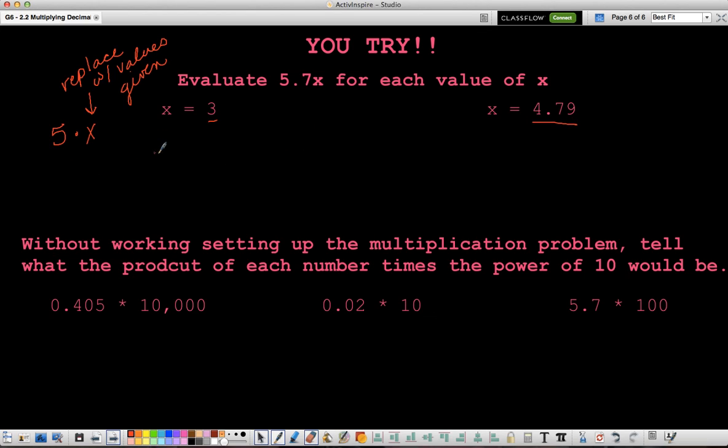So it's going to look like 5 times 3 over here, or 5.7, sorry, I forgot the 7 tenths. Times 3 over here, and then 5.7 times 4.79 over here. And then down here, I want you to, without setting it up as a multiplication problem, I want you to find the product of these problems.